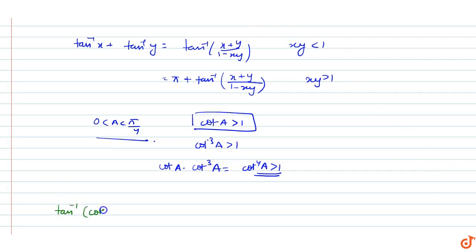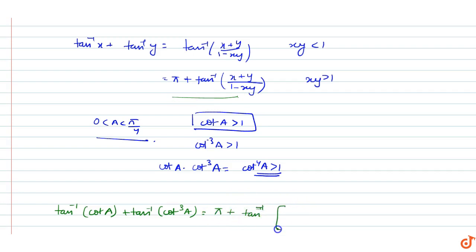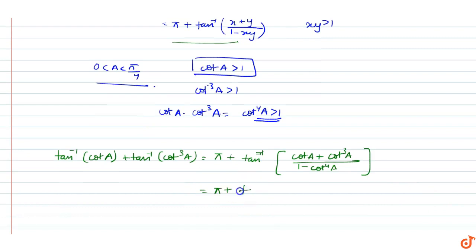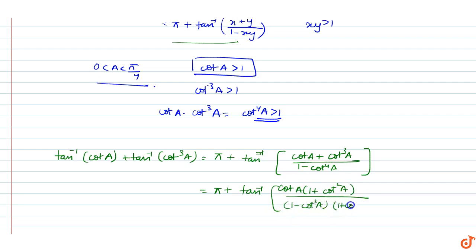So for tan inverse of cot a plus tan inverse of cot cube a, since xy > 1, we use the formula: pi plus tan inverse of (cot a + cot cube a)/(1 - cot to the power 4a). We can write this as pi plus tan inverse of cot a times (1 + cot square a), divided by (1 - cot square a)(1 + cot square a), and the (1 + cot square a) terms cancel out.